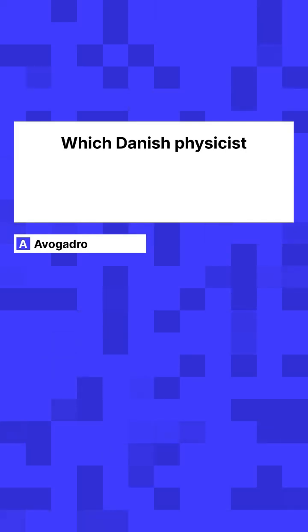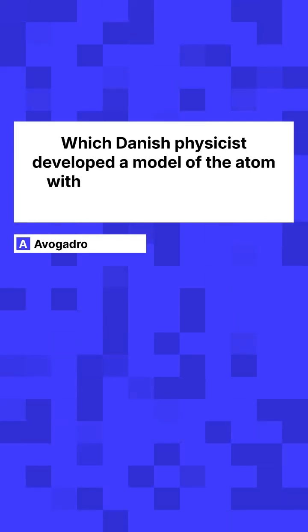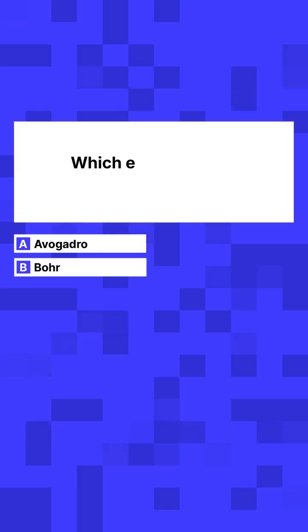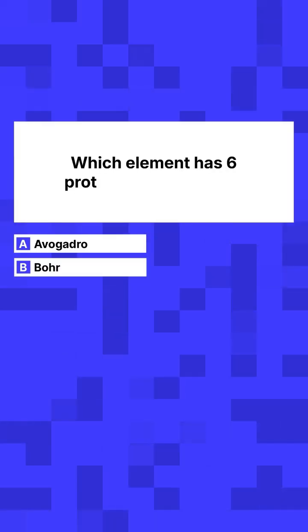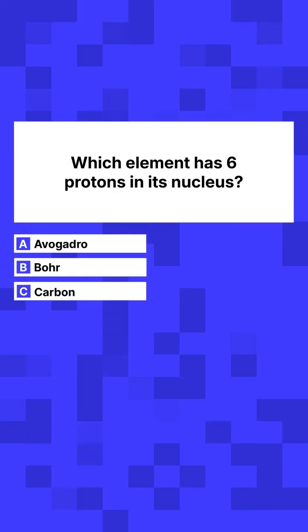B. Which Danish physicist developed a model of the atom with electrons in quantized shells? Or C. Which element has six protons in its nucleus? Carbon.